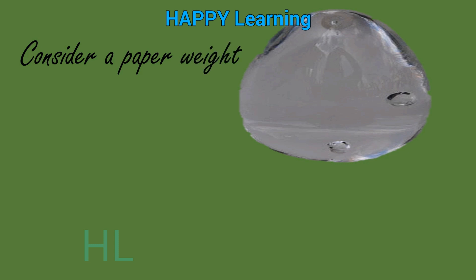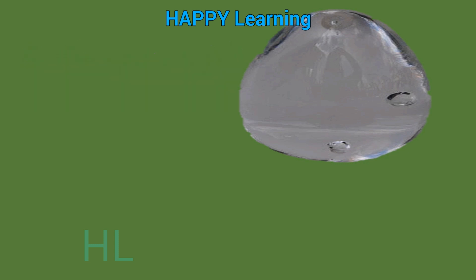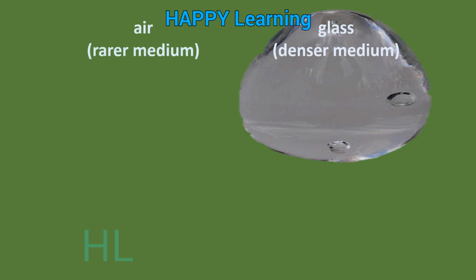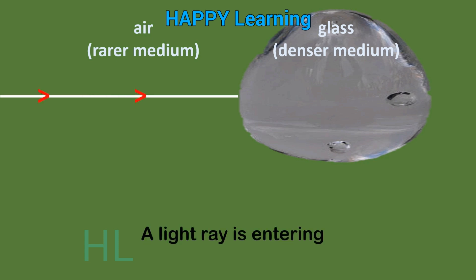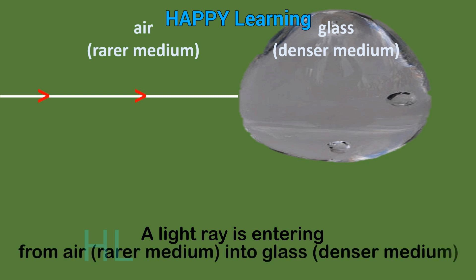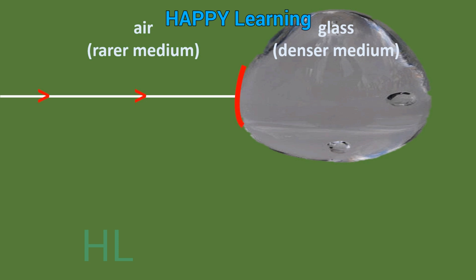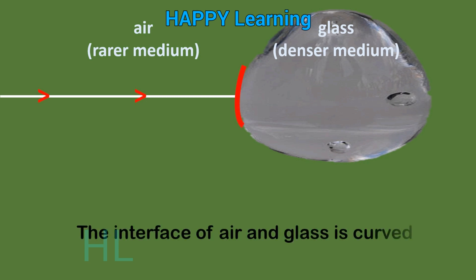Consider a paperweight. Basically it is made up of glass — it is a denser medium with respect to air as the rarer medium. A light ray is entering from air into glass, that is from rarer medium to denser medium. The interface of air and glass is curved.